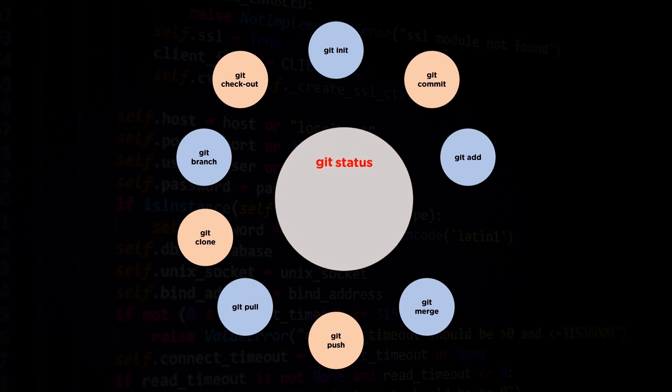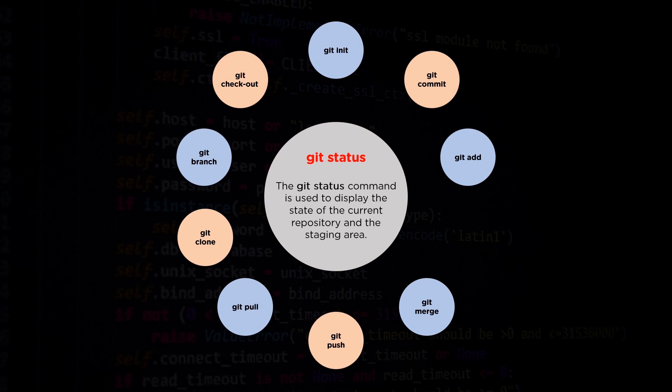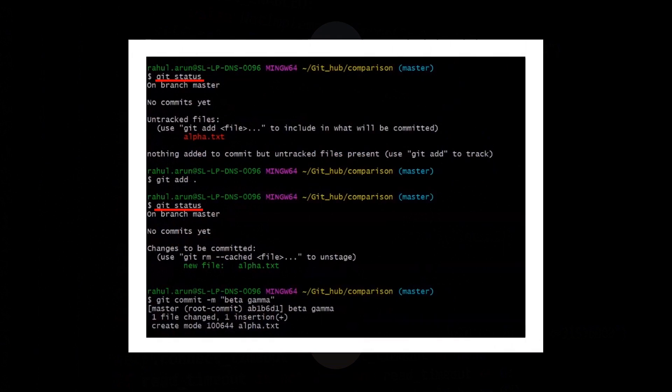The next command we must see is the git status command. The git status command is used to display the state of the working directory and the staging area. It lets us see which changes have been staged, which haven't been staged, and which files aren't being tracked yet. The git status command shows what is happening with git add and git commit. We can see on the screen that git status first shows untracked files, and after git add is executed the file name that was initially red in color becomes green.